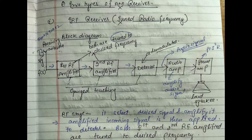These two RF amplifiers are tuned to a fixed frequency to amplify the desired band of frequencies. The amplified signal is then applied to the detector to recover the modulating signal. The detector extracts the original modulating signal — this process is called demodulation.